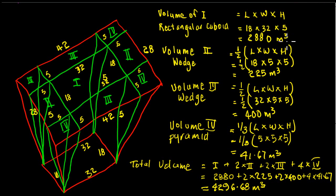18 by 32 with a height of 5. And our wedge 2, which is this one in here, is 18 by 5 here and a height of 5. And we take half of that, so that's 225 meters cubed. And we have a second wedge in here, which is 32 by 5 by 5 meters high, which is 400 cubic meters.